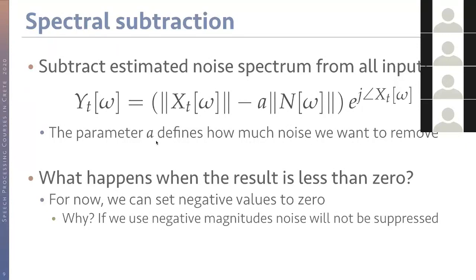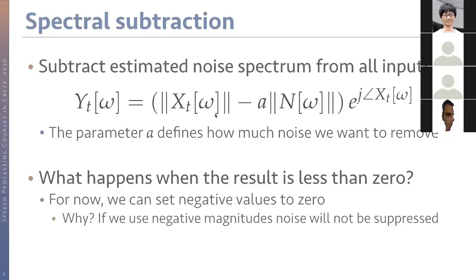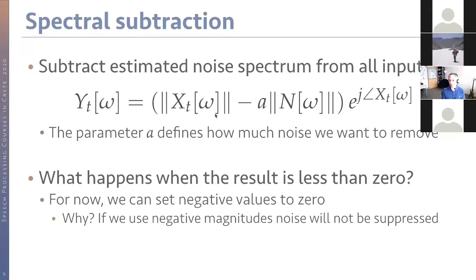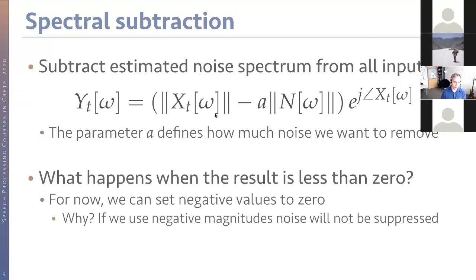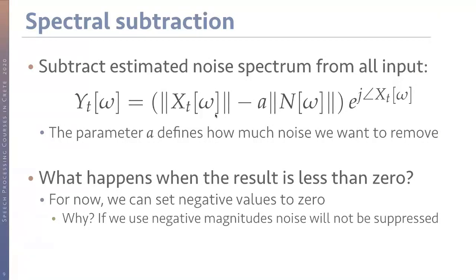Formally: the input x at time t and frequency ω — we take the magnitude, subtract some amount of the estimated noise spectrum N(ω), then add in the phase of the original signal to construct a complex number, which becomes the output time-frequency representation. The parameter alpha controls how much noise we remove. If we remove too much, we get a negative value, so we clip to zero to avoid flipping the sign of the signal.